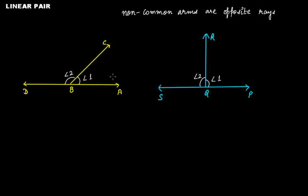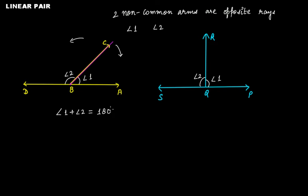So angle 1, that is angle ABC, and angle CBD, that is angle 2 — these two angles are adjacent angles. Why? Because we have a common vertex, a common arm, and the two non-common arms are on either side of this common arm. It's a special adjacent angle where the two non-common arms, BA and BD, are opposite rays. That's what a linear pair is, and angle 1 plus angle 2 will be equal to 180 degrees.